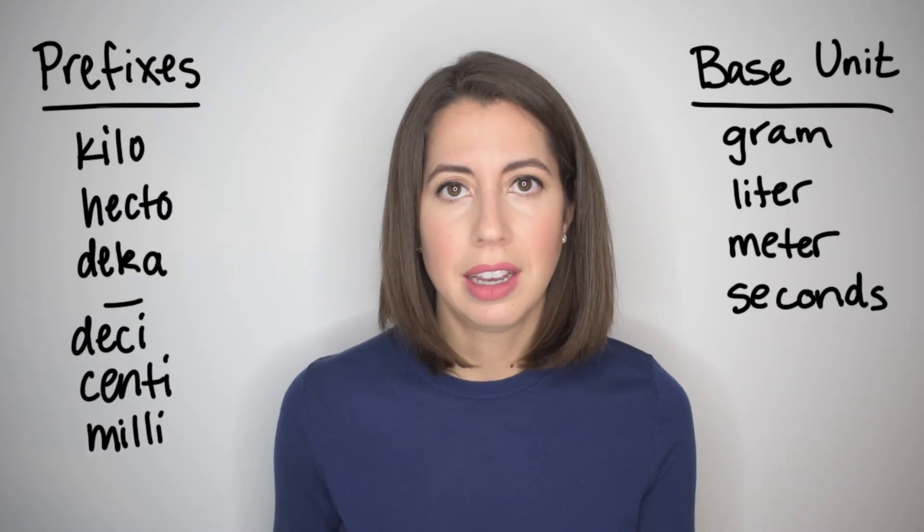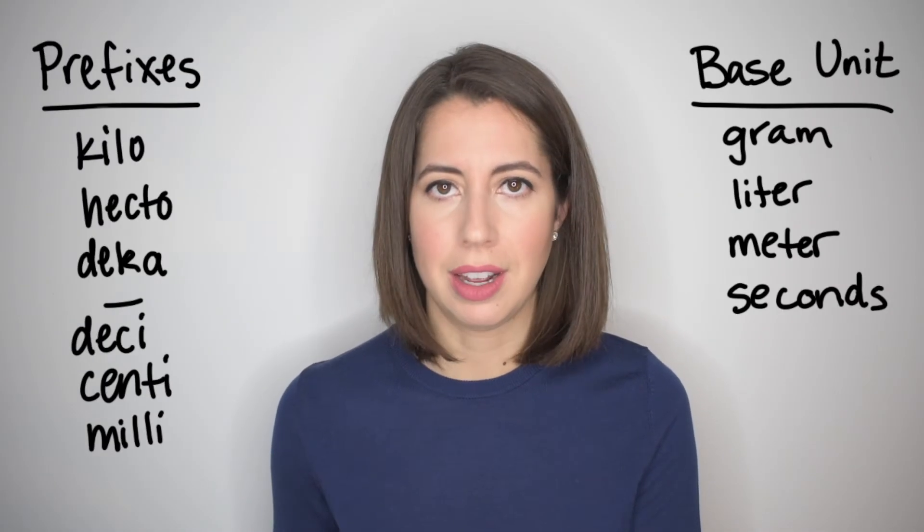mass is measured in grams. To measure something with a large mass, such as an elephant, we use kilograms. To measure something with a small mass, such as a feather, we would use milligrams. So that's why we have prefixes that we attach to the base units.